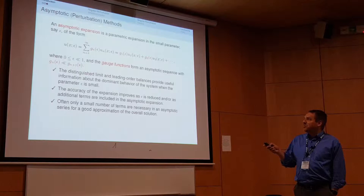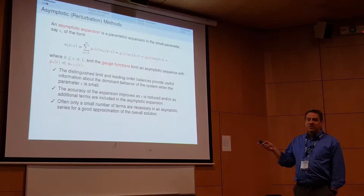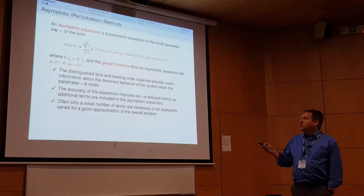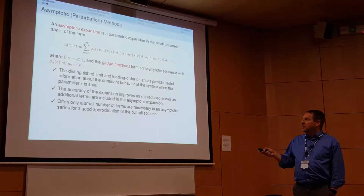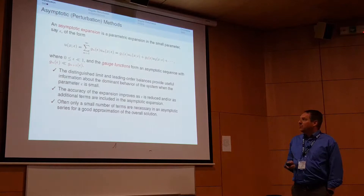A one-slide review: in asymptotic or perturbation methods, we have our asymptotic expansion including gauge functions — functions of our small parameter epsilon — and each-order terms u1, u2, u3, which we sum to approximate the solution. The gauge functions form an asymptotic sequence, each one asymptotically smaller than the previous. The process of finding the distinguished limit and leading-order balances gives you the dominant physics of the problem.